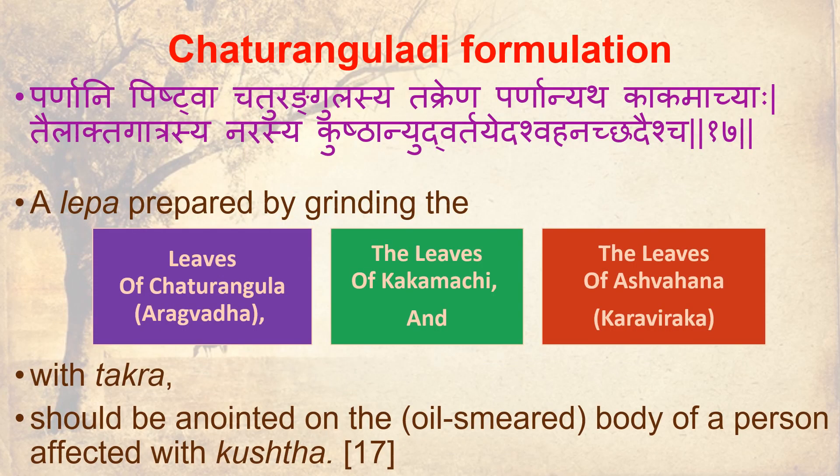Chaduranguladi Formulation: A lepa prepared by grinding the leaves of Chadurangula, the leaves of Kakamachiya and the leaves of Ashwahana, should be anointed on the oil-smeared body of a person affected with Kushta — Parnani Pistwa Chadurangulasiya Takrayana.